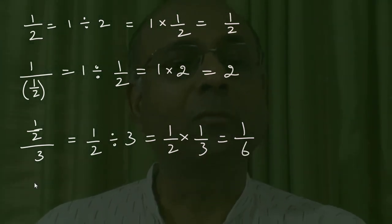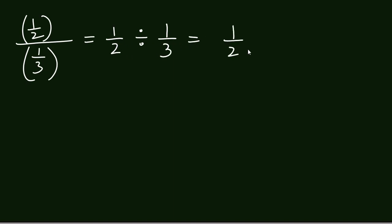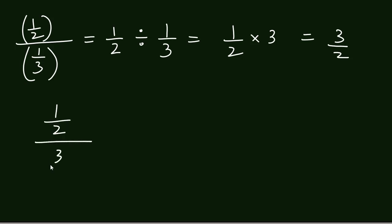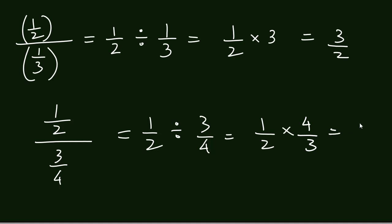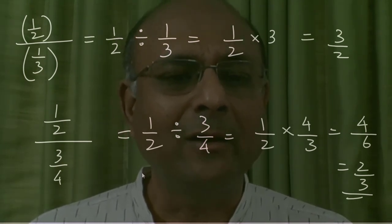Now suppose I look at (1/2) ÷ (1/3). This is 1/2 × reciprocal of 1/3, which is 3, giving 3/2. And if I have (1/2) ÷ (3/4), I write it as 1/2 × reciprocal of 3/4 = 1/2 × 4/3 = 4/6 = 2/3 after simplification, cancelling the 2. So we know this quite well.